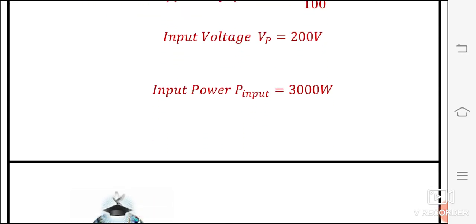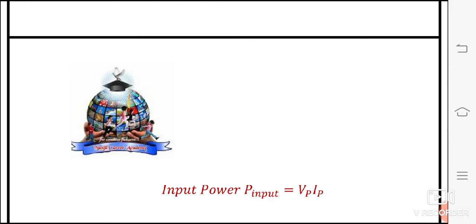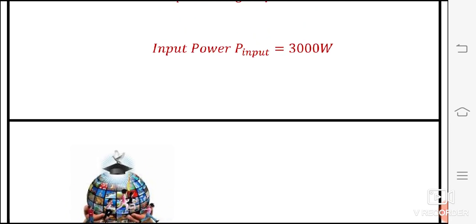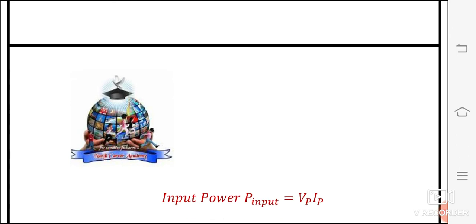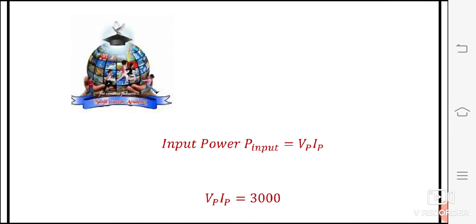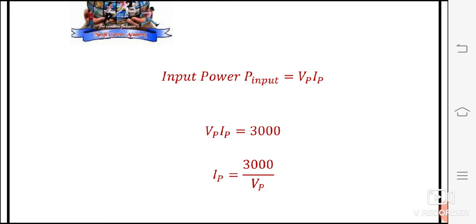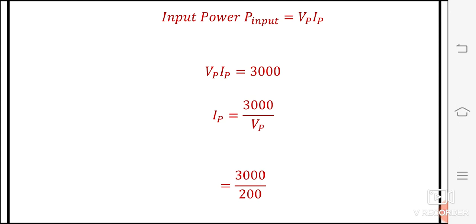The formula for input power is: input power P_input is equal to VP × IP. We already know that input power is equal to 3000 watts, and the product of primary voltage and primary current is called input power. So VP × IP is equal to 3000 watts, therefore IP is equal to 3000 divided by VP, which is equal to 3000 divided by 200.